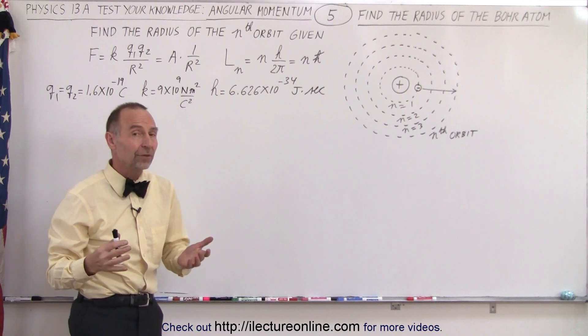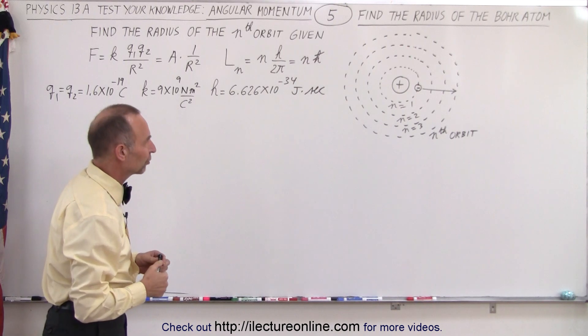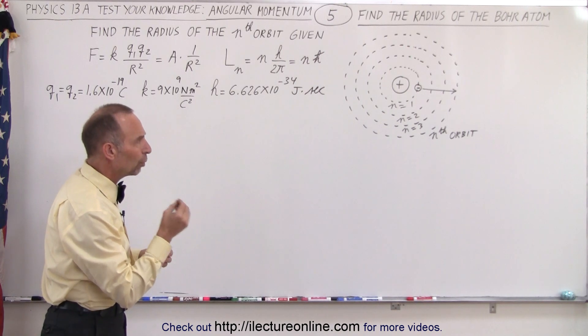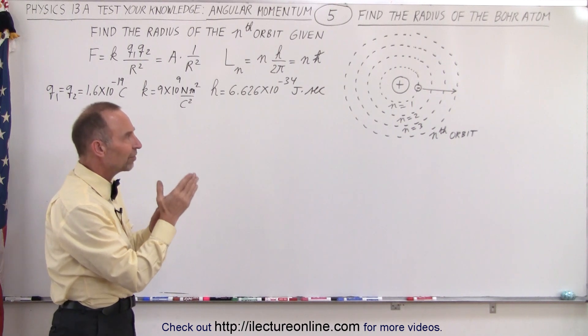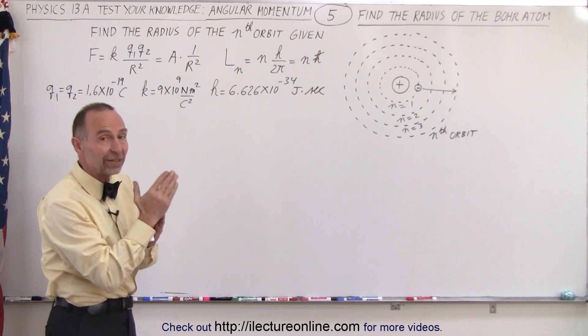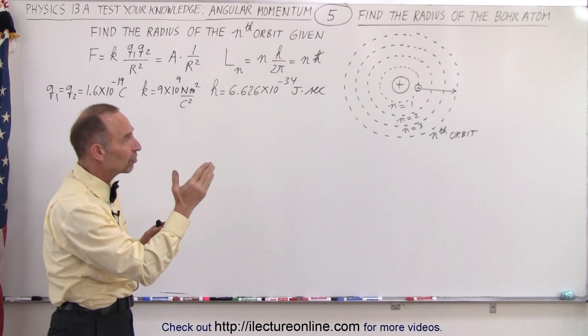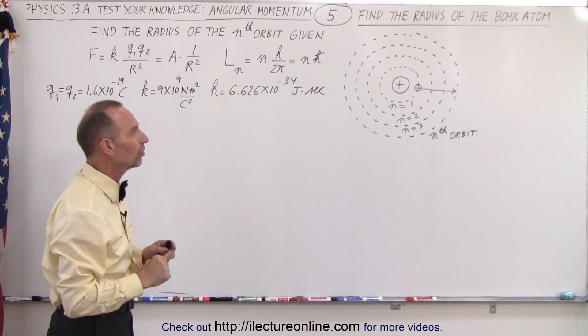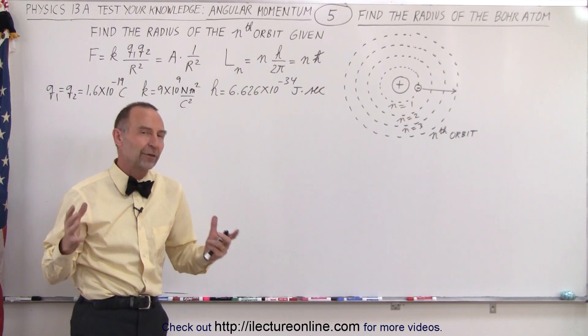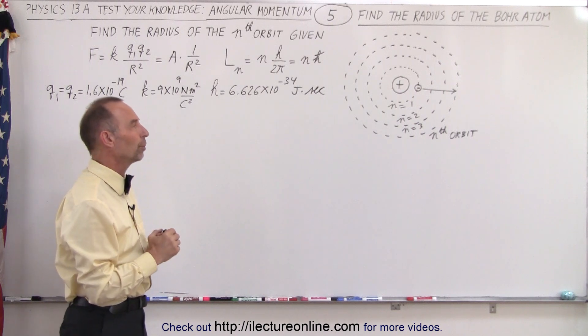It was found a long time ago, about a hundred years ago, that the orbits of the electrons are quantized - that the electrons can only exist at very specific locations in orbit around the nucleus. So it all came down to trying to figure out the radius of each of those orbits.